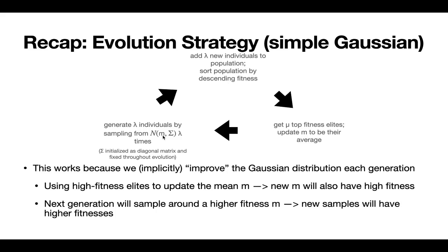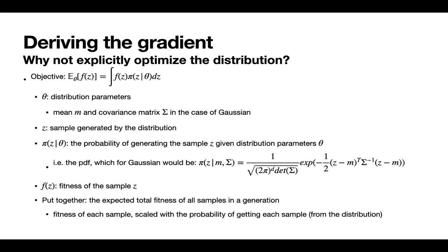So every generation, we are kind of improving the fitness of the mean, and we are kind of shifting the center of our distribution gradually towards the optimum, such that every next generation we are more likely to sample higher fitnesses with our population, which are in turn going to give us even better updates on the distribution parameters, and so on. So in conclusion, evolution strategy works and actually optimizes because every generation we are implicitly improving the Gaussian distribution. In comparison, evolution strategies implicitly improve the distribution by sorting by fitness and biasing towards high fitness elites, whereas the evolution gradient decides to be more explicit with optimizing the distribution parameters.